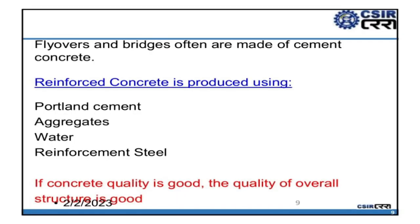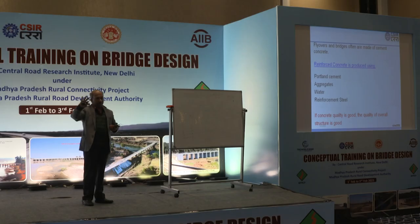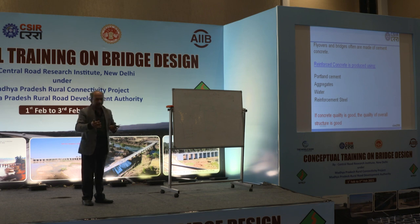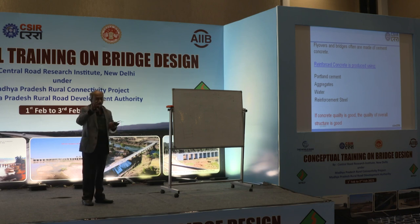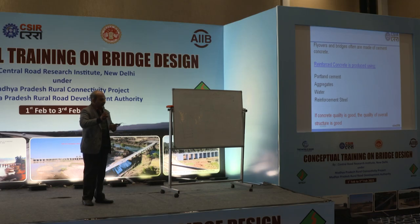As a civil engineer, we should know what is happening in the concrete — what is leading to problems. We know reinforced concrete is made of Portland cement, aggregates, water, and reinforcement steel. All four of these contribute towards the good or bad of the concrete. If the concrete quality is good, the quality of the overall structure is good. All components are responsible.